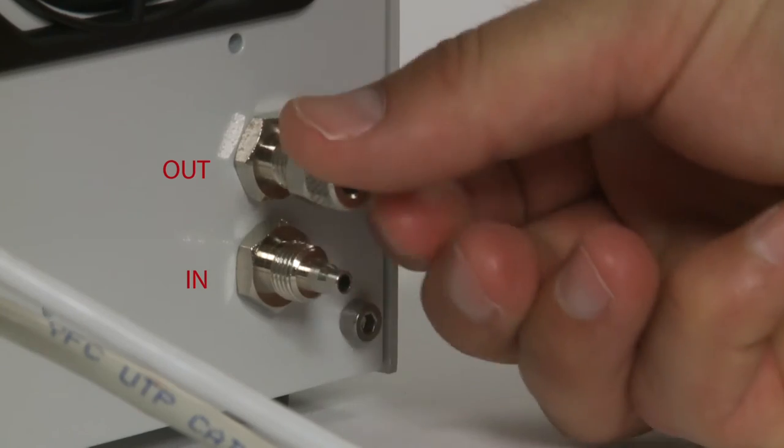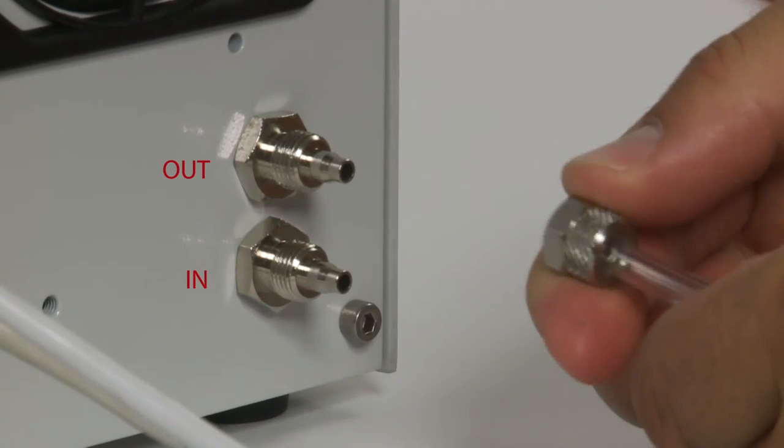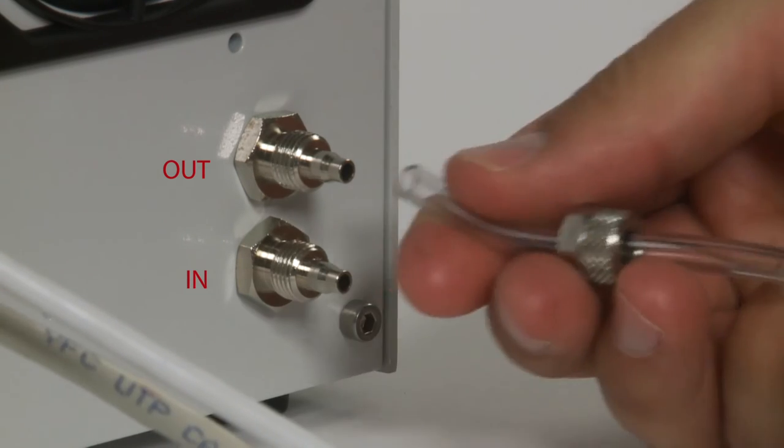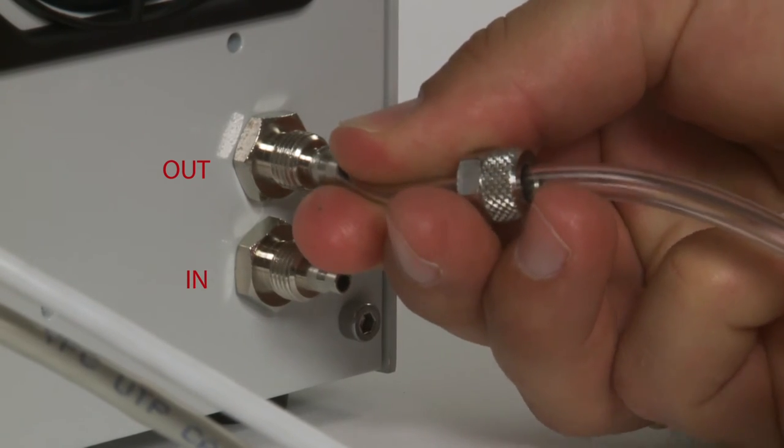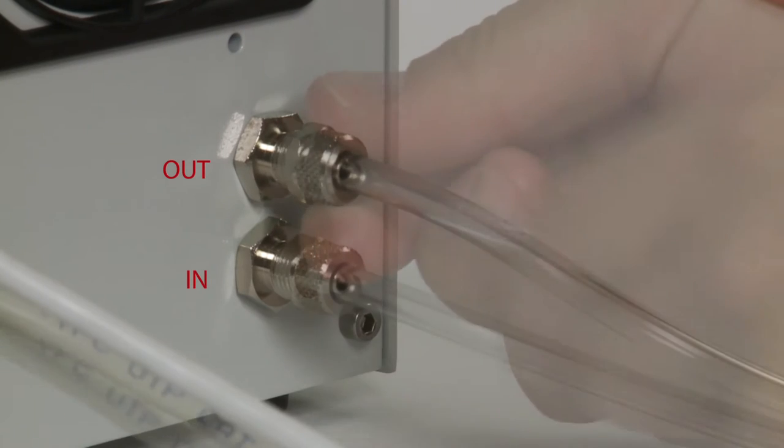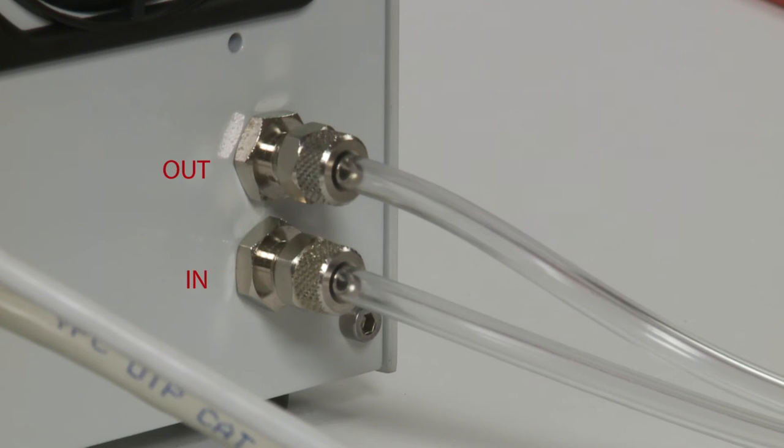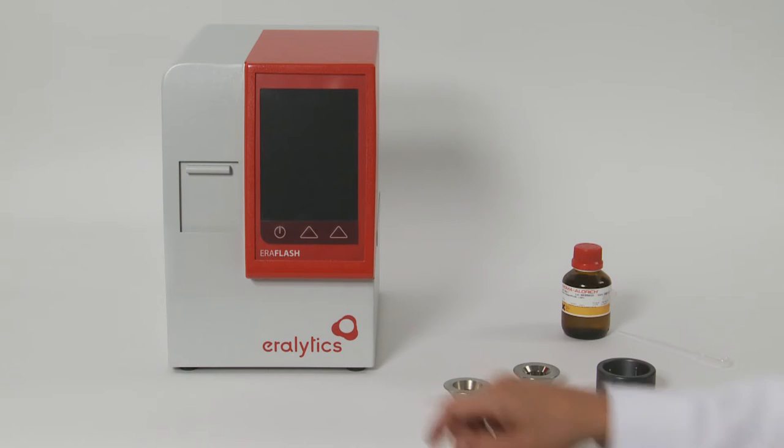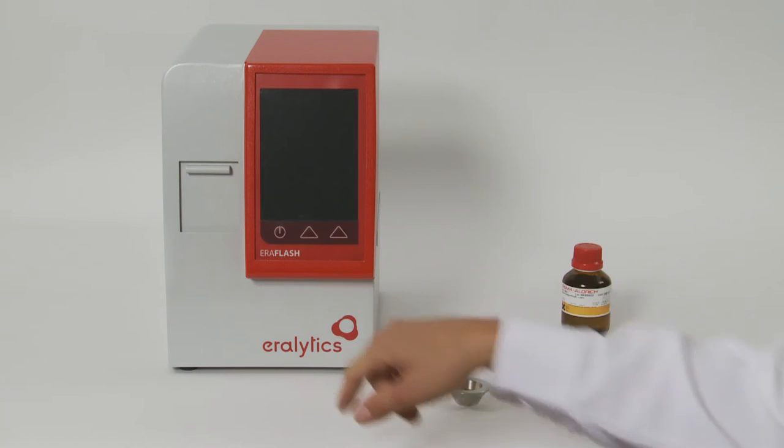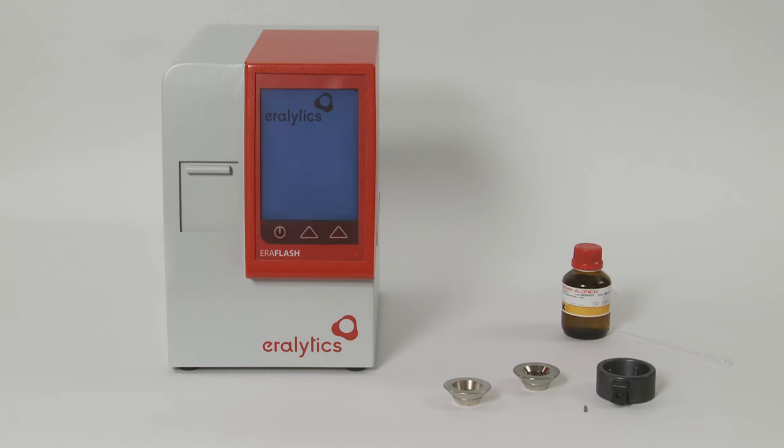For measurements below zero degrees Celsius, connect the Error Flash to an external cooling device. The upper connector is for coolant out and the lower connector for coolant in. Switch on the analyzer by pushing the power button on the front. After a few seconds, the instrument is ready for use.